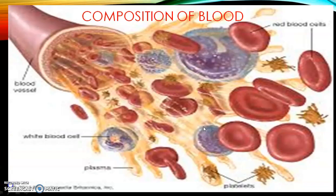So how will you define blood? Blood is defined as a fluid connective tissue in which all the cells, called formed elements, are suspended in a liquid portion called plasma. It is a body fluid present in humans and other animals. Blood delivers necessary substances such as nutrients and oxygen to the cells and transports metabolic waste products away from the cells.